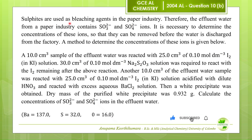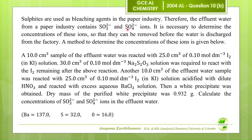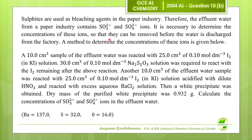Sulphites are used as bleaching agents in the paper industry. Therefore, the effluent water from a paper industry contains sulphite and sulphate ions. It is necessary to determine the concentrations of these ions so that they can be removed before the water is discharged from the factory. A method to determine the concentrations of these ions is given below.